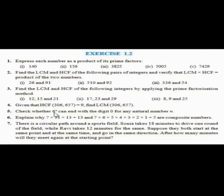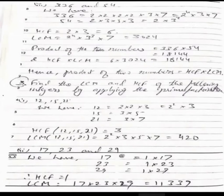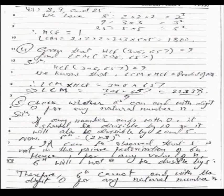The fifth question is: check whether 6 to the power N can end with the digit 0 for any natural number N. If any number ends with 0, there are some conditions for that. It should be divisible by 10 or it will also be divisible by 2 and 5. This is the condition.